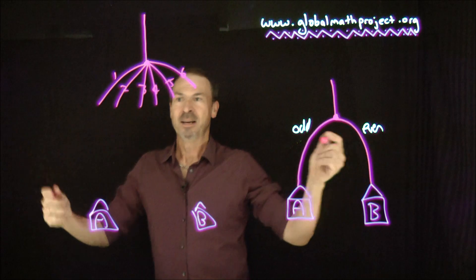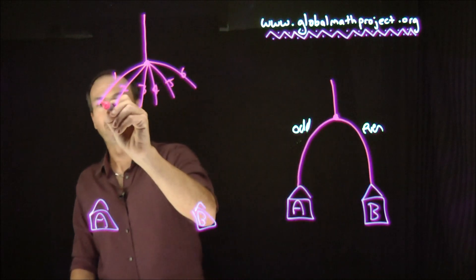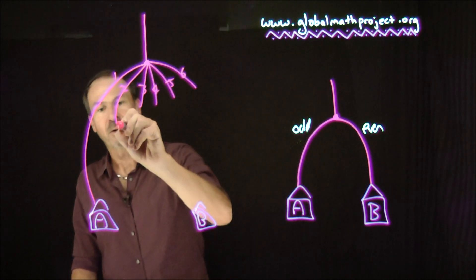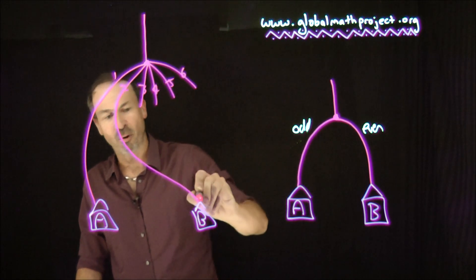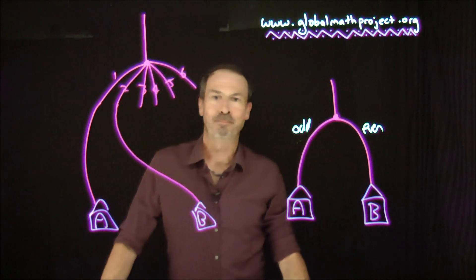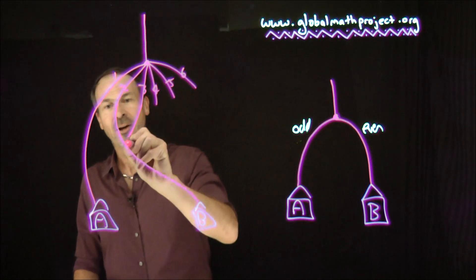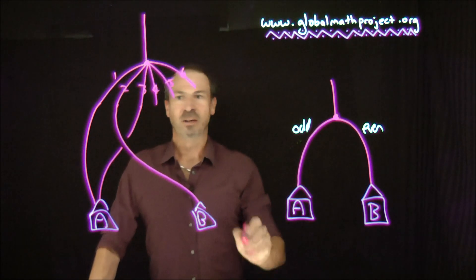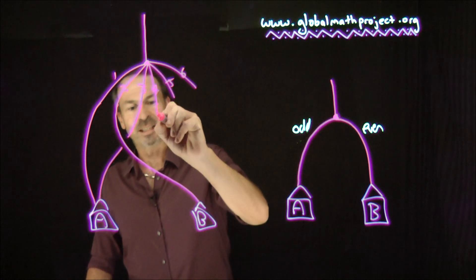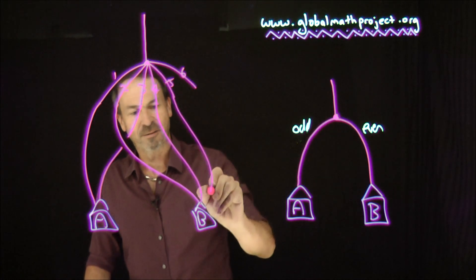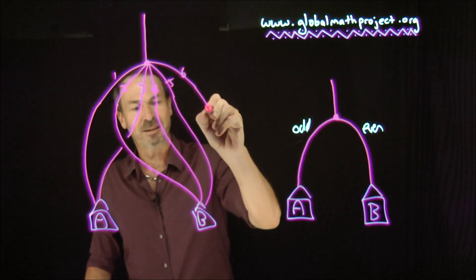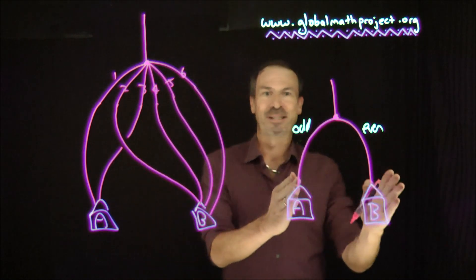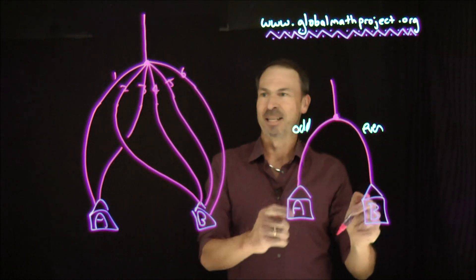Just to have some fun, suppose the people that go to the one path end up in house A, people that roll a two go to house B, those that roll a three go to house A, and those that roll four, five, or six follow paths four, five, or six to house B. So there is a sort of lopsided version of that.